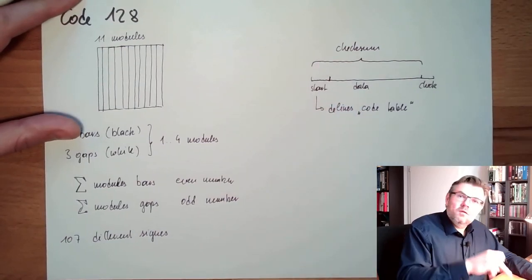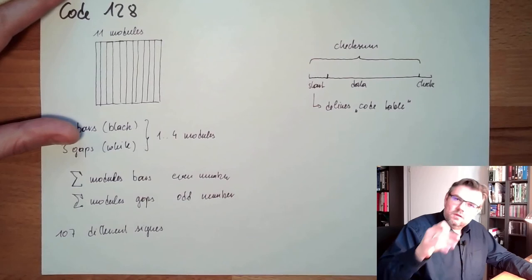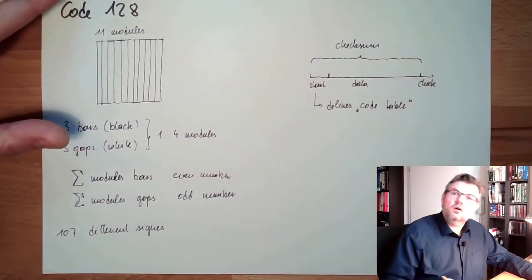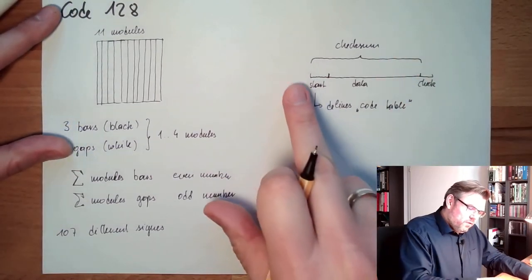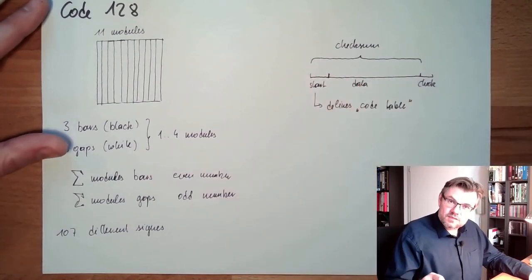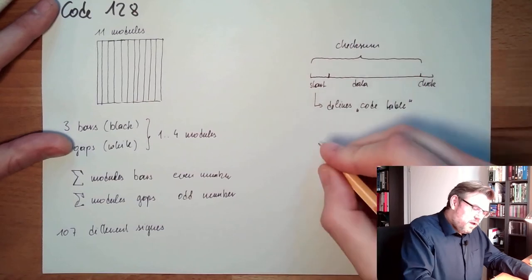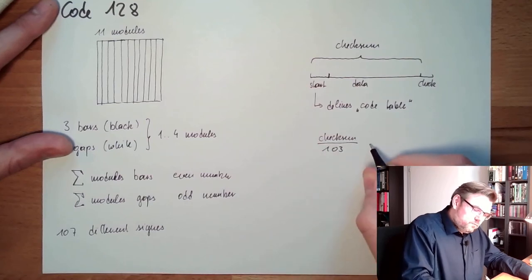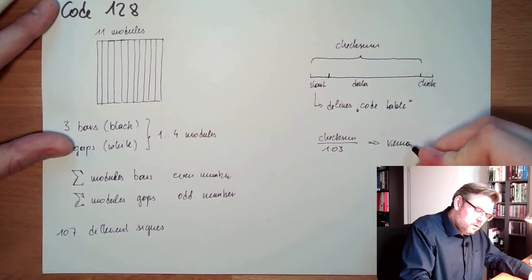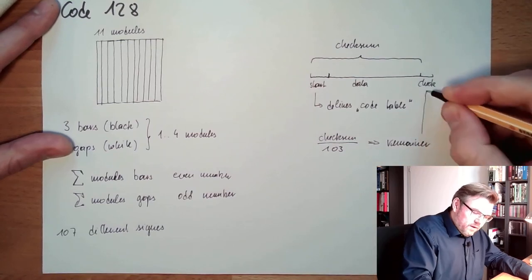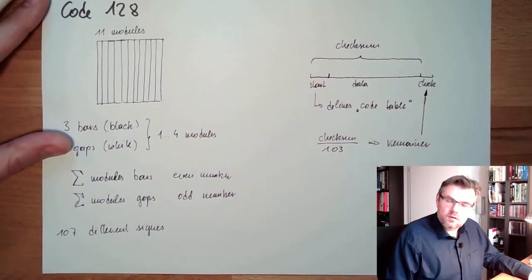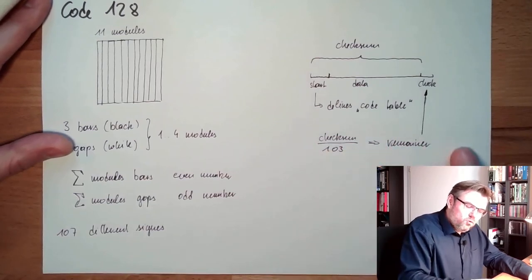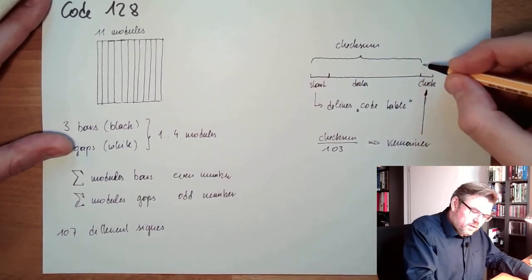With position number one, one multiplied by the data, by the content of the data. Position number two, two multiplied and so on. So I have not only the values of the signs, but also the position of the signs included there. Then there is the checksum, and this checksum is then divided by 103. And the remainder will define the check sign. And then I'm using the corresponding sign to whatever is coming as the result of this. I print it as a check sign.